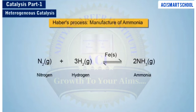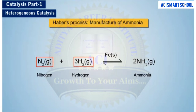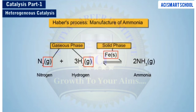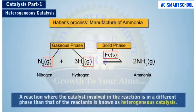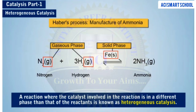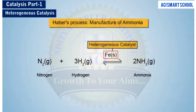Let us now discuss heterogeneous catalysis. Consider the manufacture of ammonia by Haber's process. Both the reactants nitrogen and hydrogen are in the gaseous phase and the catalyst iron is in the solid phase. A reaction where the catalyst involved in the reaction is in a different phase than that of the reactants is known as heterogeneous catalysis, and iron is a heterogeneous catalyst in Haber's process.